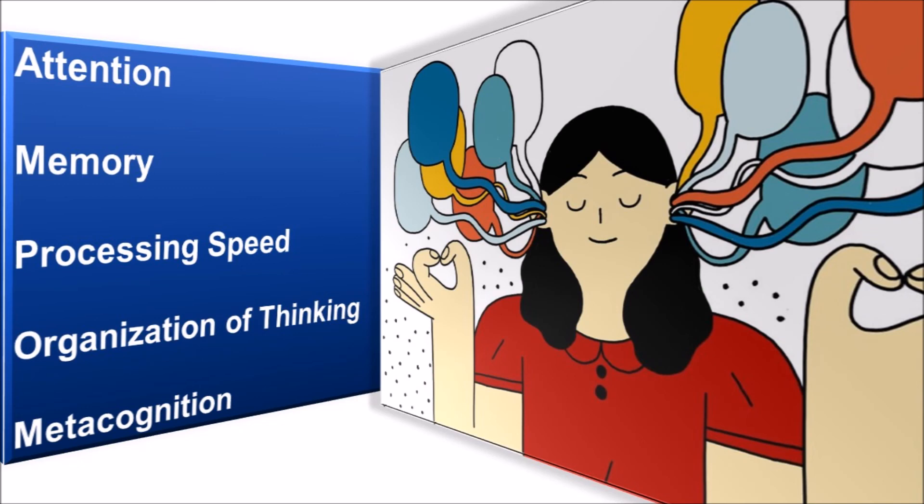Metacognition. Older children can think about thinking itself. This often involves monitoring one's own cognitive activity during the thinking process. Metacognition provides the ability to plan ahead, see the future consequences of an action, and provide alternative explanations of events.